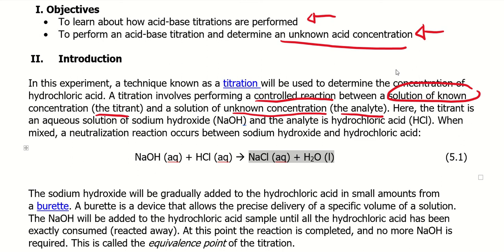For us, the titrant is your NaOH and the analyte is HCl. So these are both strong. You have a strong base right here, your NaOH, and you have a strong acid. And this always forms, any strong acid, any strong base always forms a salt or an ionic soluble compound and a water molecule.